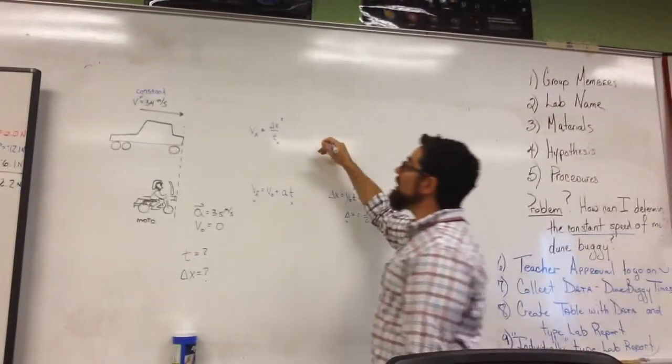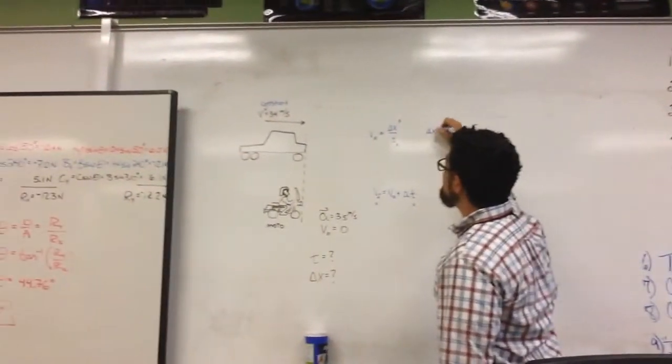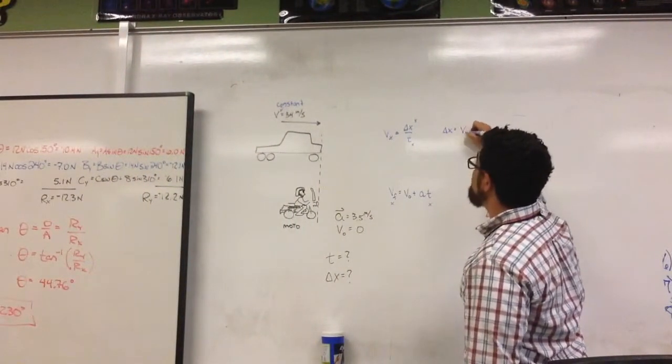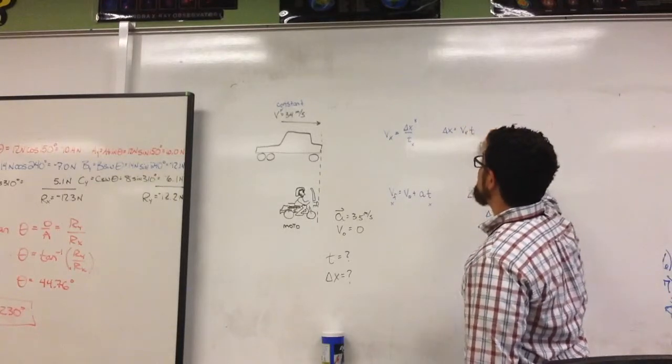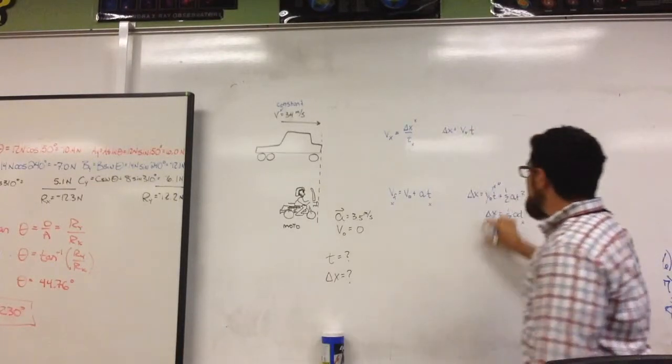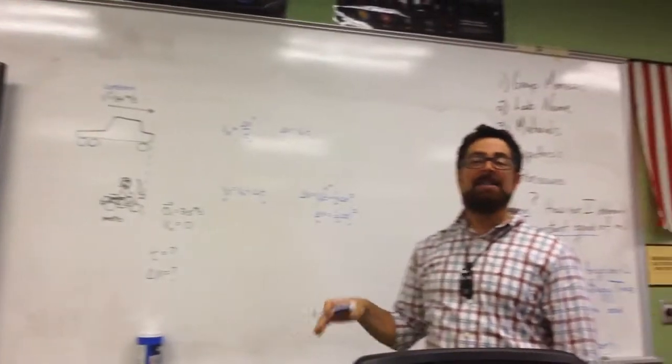I can solve the upper one for delta x. That becomes delta x is equal to the velocity of the speeding truck times the time. This delta x is equal to that delta x at the same time.